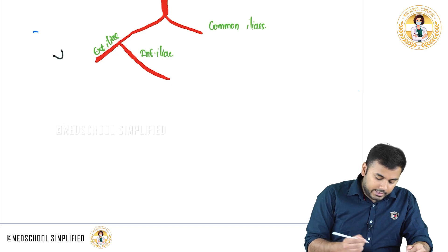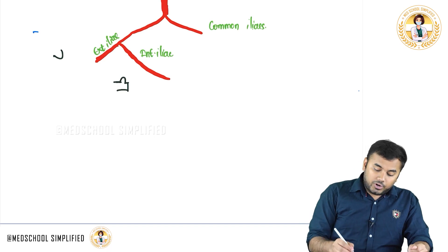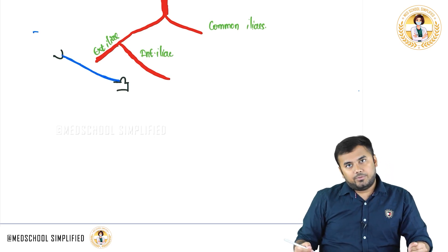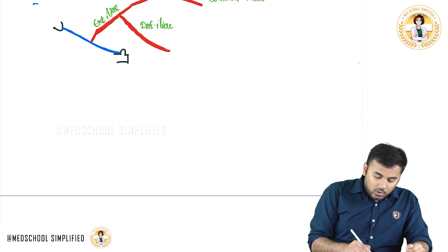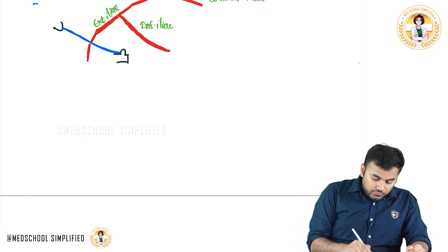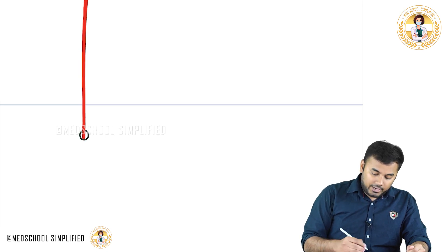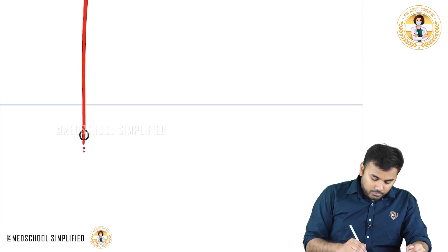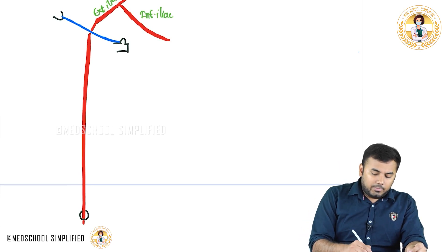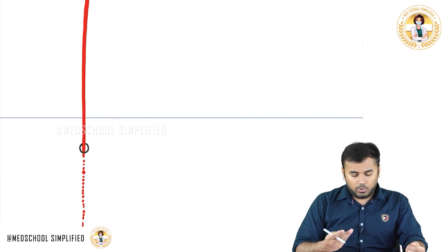You have the anterior superior iliac spine and the pubic tubercle. From the anterior superior iliac spine to the pubic tubercle, there is a ligament called the inguinal ligament. The external iliac artery passes just below this inguinal ligament, and once it passes below, the name changes to femoral artery. This femoral artery comes all the way down, enters the adductor hiatus, and continues on the posterior side as the popliteal artery.